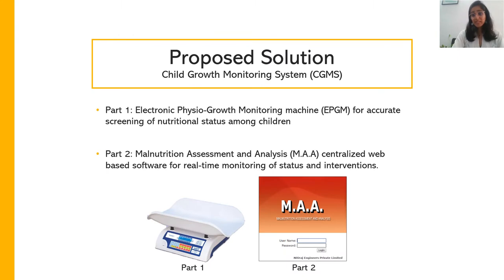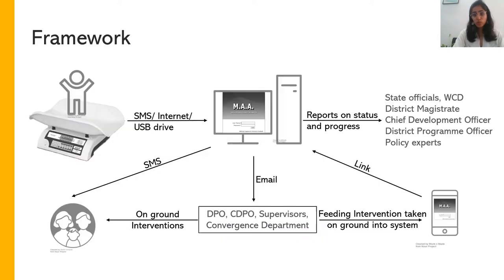The proposed system consists of two parts: one is the EPGM machine, which is a smart scale as you can see here, and the second is a real-time monitoring dashboard called MARS. How it works is very simple — growth of a child is measured using the EPGM machine and that data is transferred to the dashboard through either SMS, internet, or USB drive. The dashboard analyzes the data and sends the list of all malnourished children under each category to various officials of all convergent departments. It also sends SMS to parents and Aanganwadi workers.